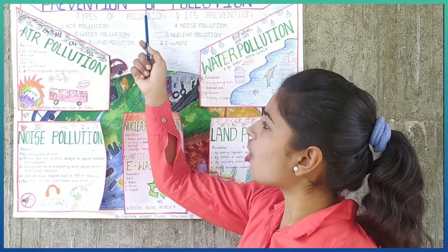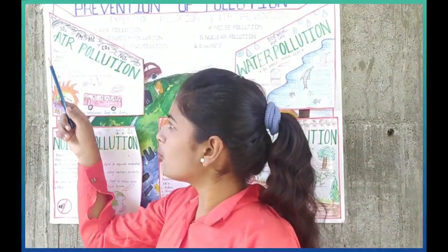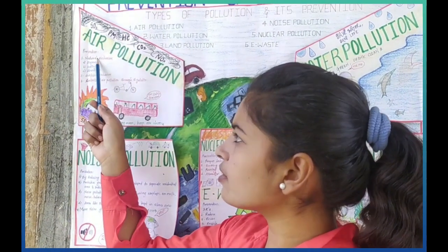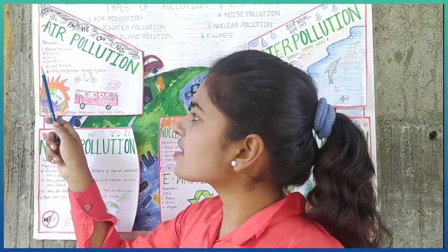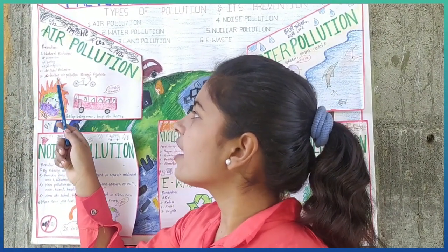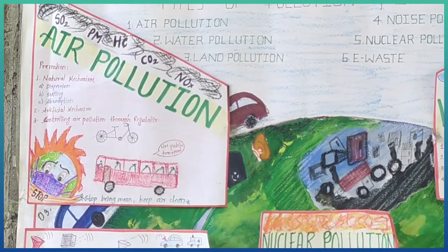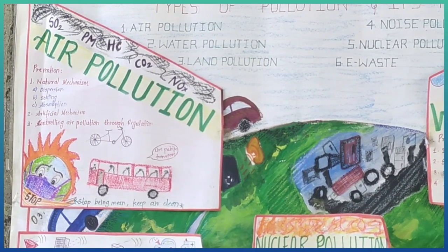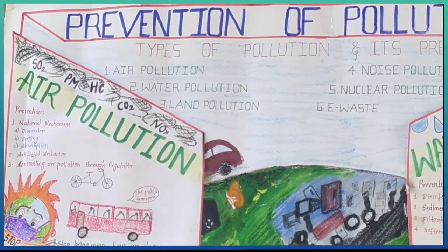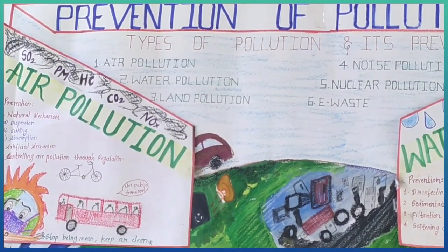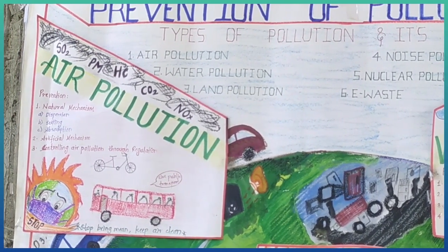Now we are going to see about prevention of pollution. First, we will start with air pollution. Prevention of air pollution can be done by natural mechanism — dispersion, settling, and absorption — and second is artificial mechanism, and third is controlling air pollution through regulation. In natural mechanism, some suspending pollutants are dispersed by wind. In settling, due to gravitational pull, heavy pollutants settle. In absorption, pollutants are absorbed by moisture or rain drops and air is made clear.